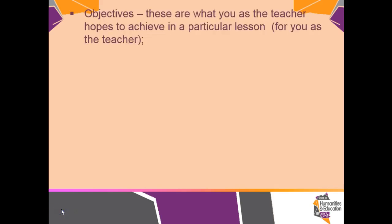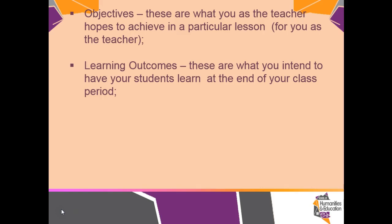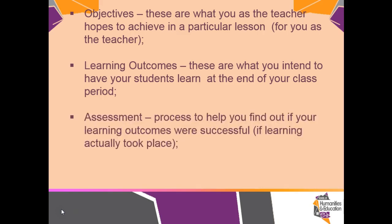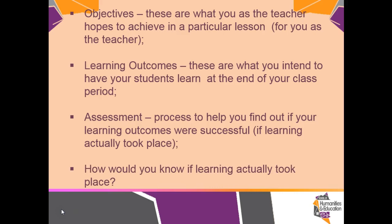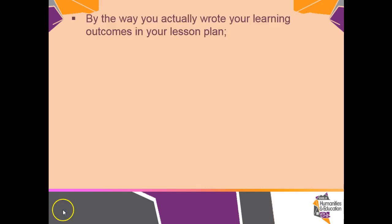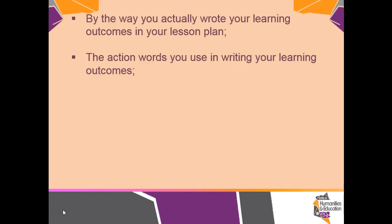We have listed here the objectives — these are what you as a teacher hope to achieve in a particular lesson, so your objectives are for you as a teacher. Learning outcomes are what you intend to have your students learn at the end of your class period. The assessment is the process to help you find out if your learning outcomes were successful, if learning actually took place. The answer to how you know if learning has taken place is actually by the way you wrote your learning outcomes in the lesson plan. The action words you use in writing your learning outcomes is the key to knowing if your students achieved the outcomes.